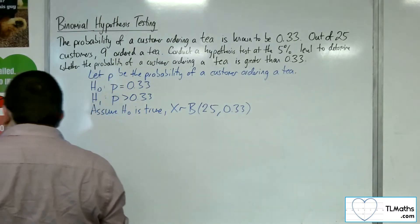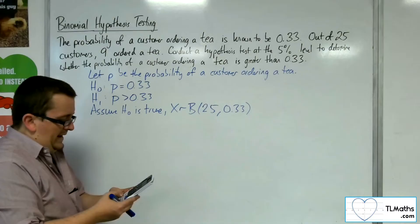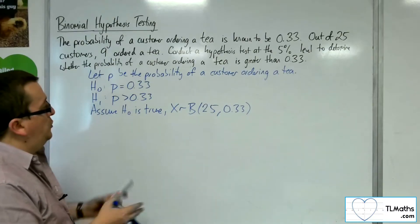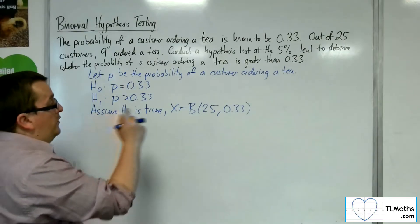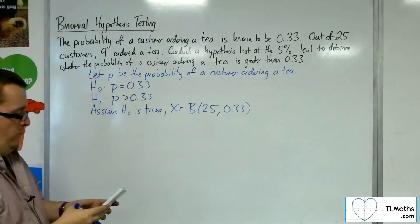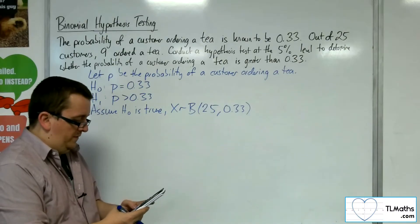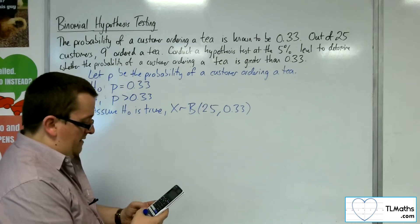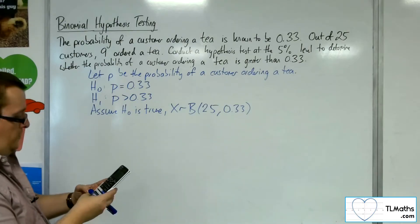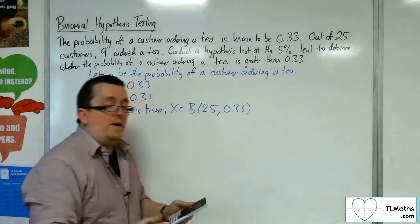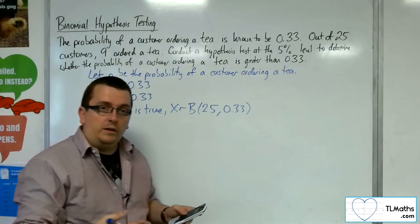Now we go to our tables — menu, number 7, binomial CD, and list. Do we need to type in all of 0 to 25? Probably not. A third of the way is around about 8, so we probably just need to type in from 7 or 8 up to 20. N is 25 and the probability is 0.33. If I'm not getting the values that I want, I can always increase the number on my list.